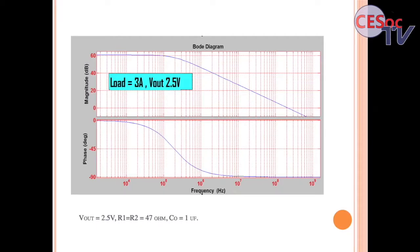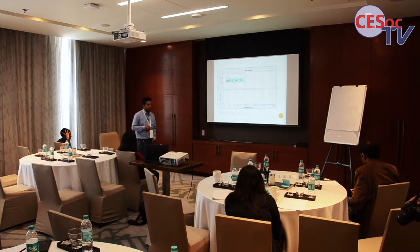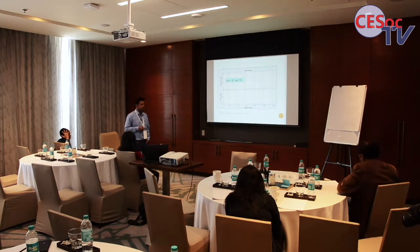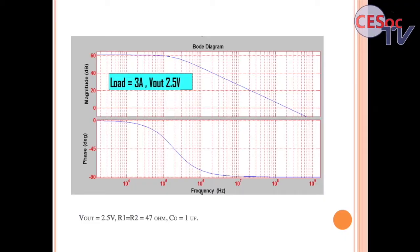The Bode plot shows the system has very high bandwidth. This example uses 2.5 volt output, R1 of 247 ohms, and 1 microfarad output capacitor. To reduce gain and suppress noise at 1 MHz or 10 MHz, we increase the capacitor, shifting the pole toward lower frequency depending on where the noise is.